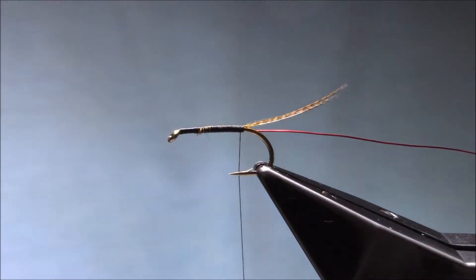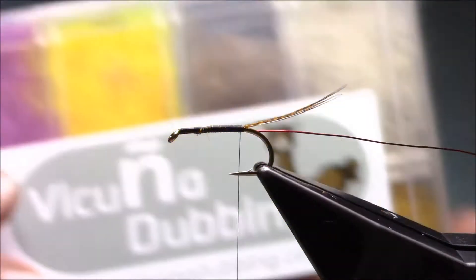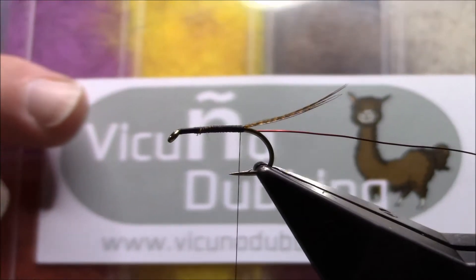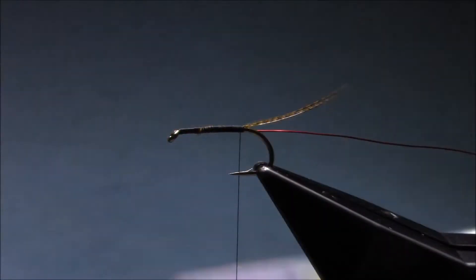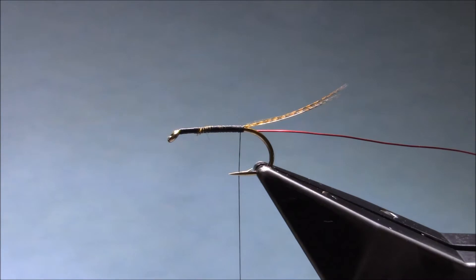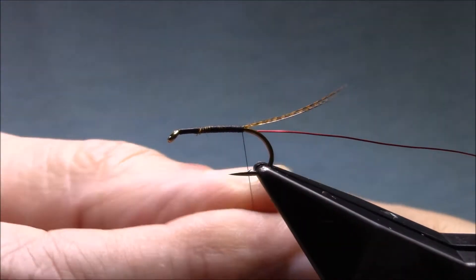And the body is two parts, and this is Vicuna dubbing. The two colors I'm using are Golden Ochre for the rear half and Blood Red for the front half.